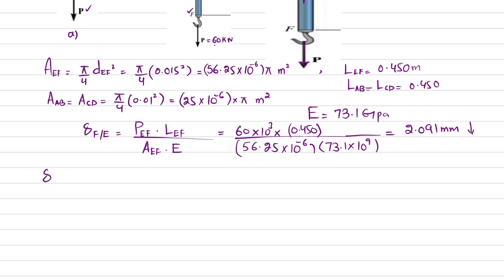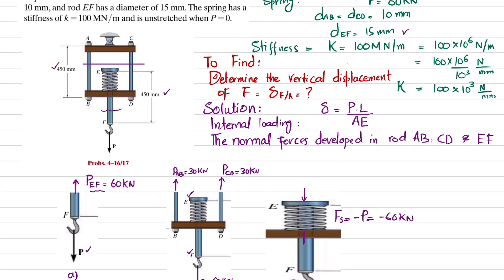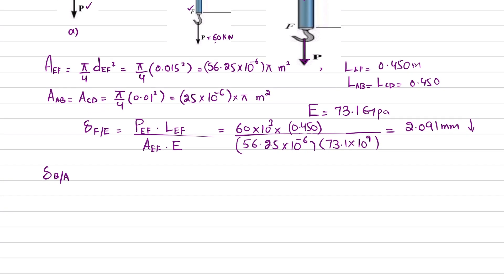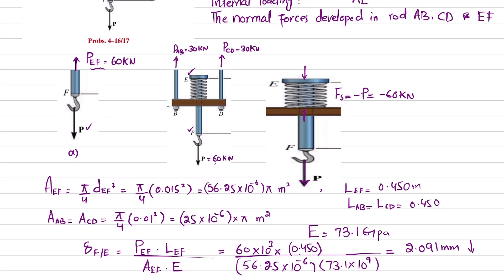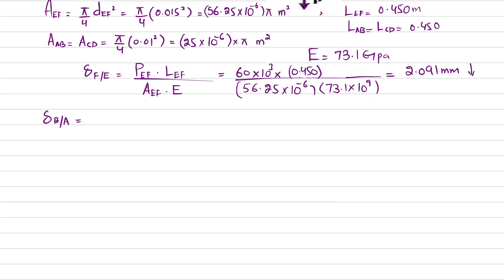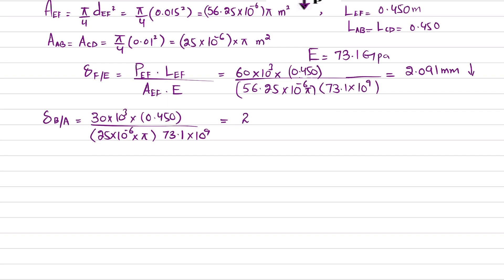Similarly, the displacement of B with respect to A (same as D with respect to C, since identical material, load, and length): δ_B/A = (30 × 10³ × 0.450) / (25 × 10⁻⁶ π × 73.1 × 10⁹) = 2.3514 mm. Since positive, point B moves downward away from A.